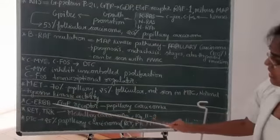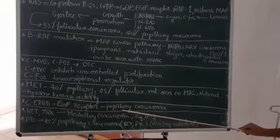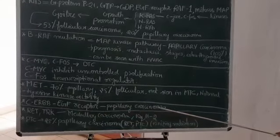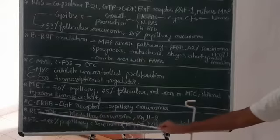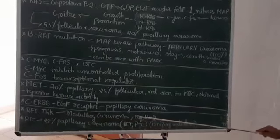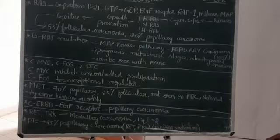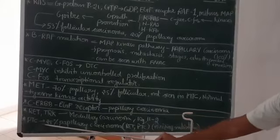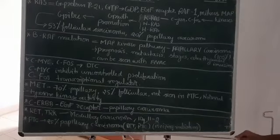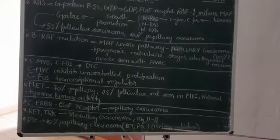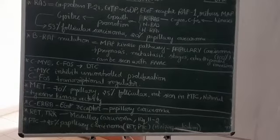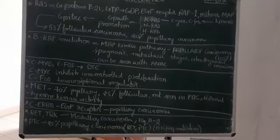The C gene is an EGF receptor leading to papillary carcinoma. RET and PTC genes are also associated with papillary carcinoma and are seen in people exposed to ionizing radiation.